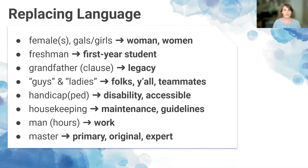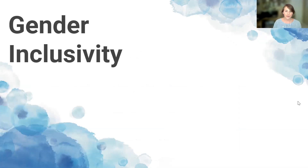Gendered terms like 'man hours' or 'manning the inbox' use unnecessary gendered language — simply using the word 'work' instead is better. 'Master' — as in master copy, master key, or master branch — is a problematic term; replacements include 'primary,' 'original,' or 'expert.' Let's take a look at the chat to see if anyone has shared additional terms or alternatives.